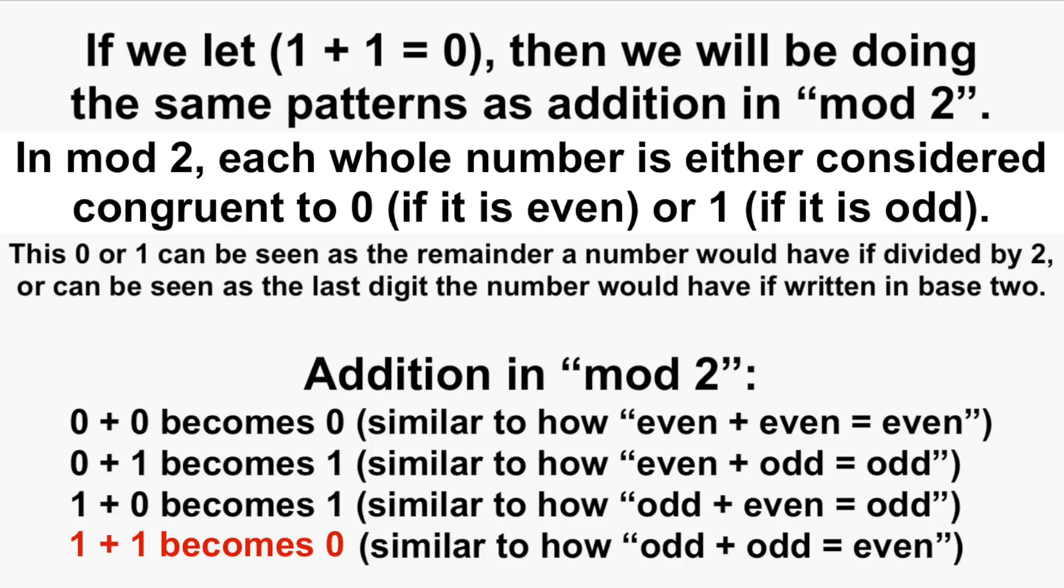If we start with another sequence that's a one with an endless amount of zeros on each side of it, and then generate new sequences such that each term is the sum of the two numbers above it, but this time we make one plus one equals zero, that will end up falling into the arithmetic patterns of what's called mod two.